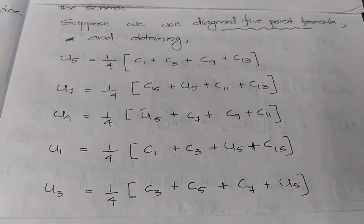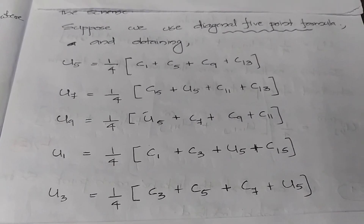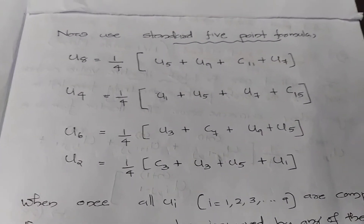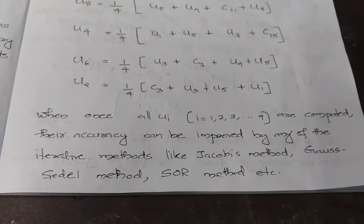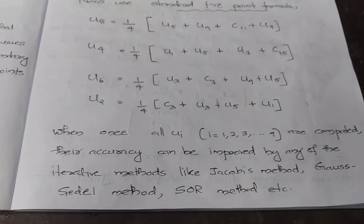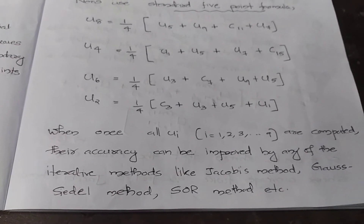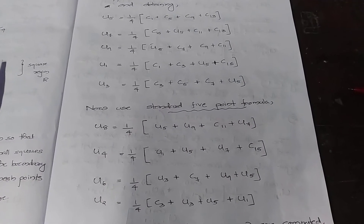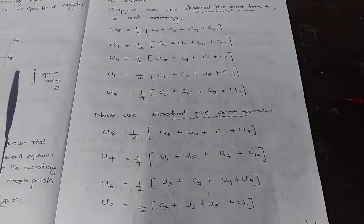Applying the diagonal five point formula, we first obtain u5, u7, u9, u1, and u3. Then using the standard five point formula, we obtain u8, u4, u6, and u2 in terms of boundary values and the previously computed u values. Once all u(i,j) for i = 1 to 9 are computed, their accuracy can be improved by iterative methods.